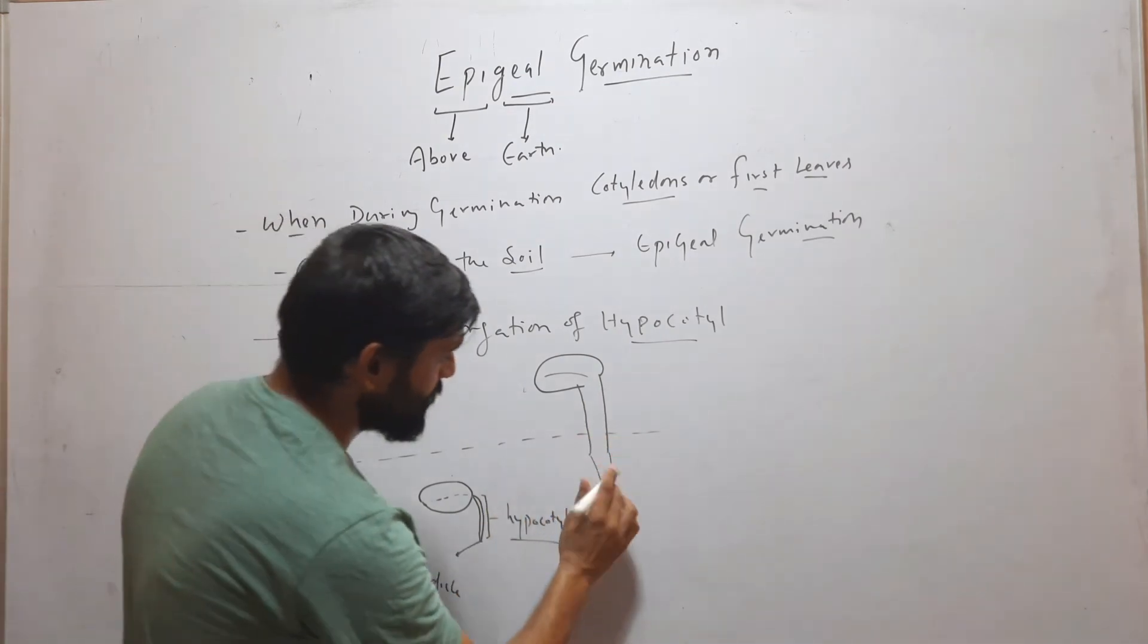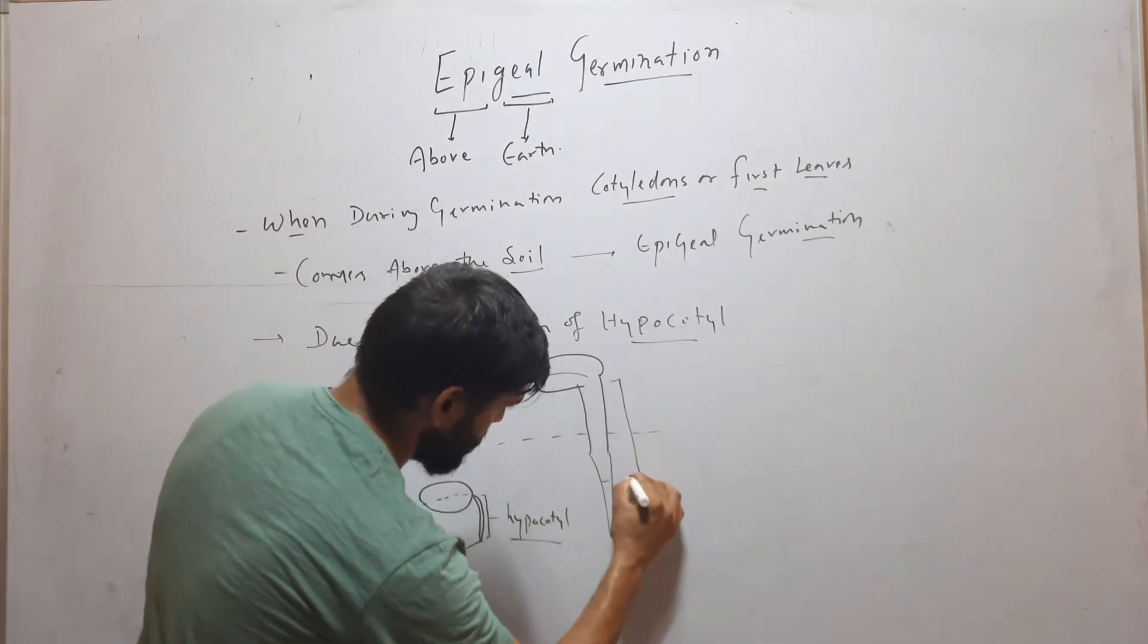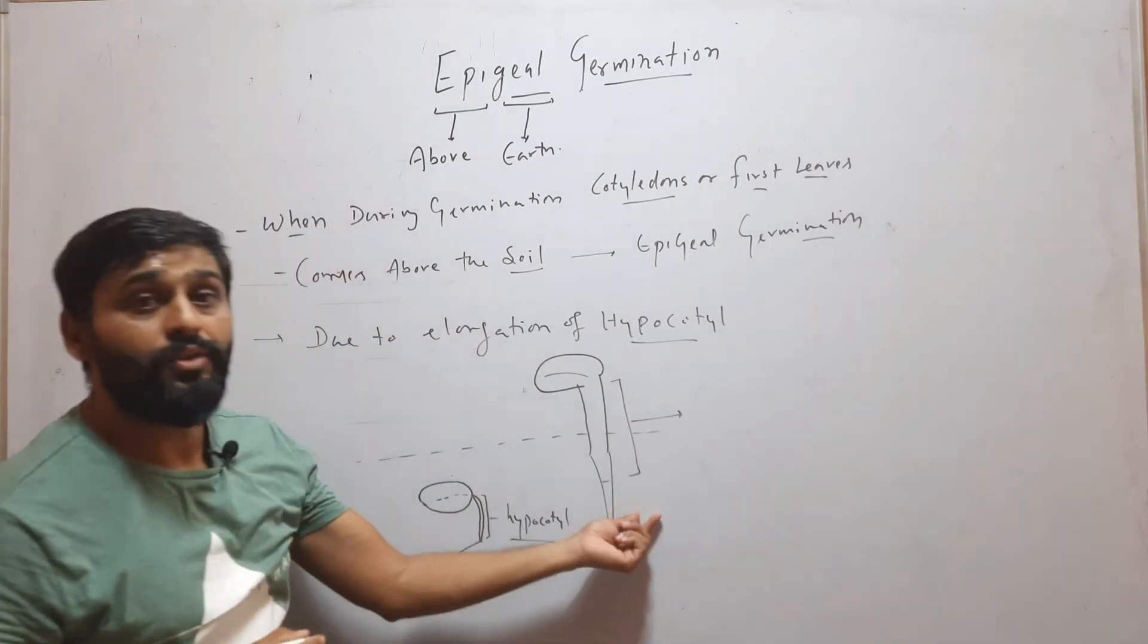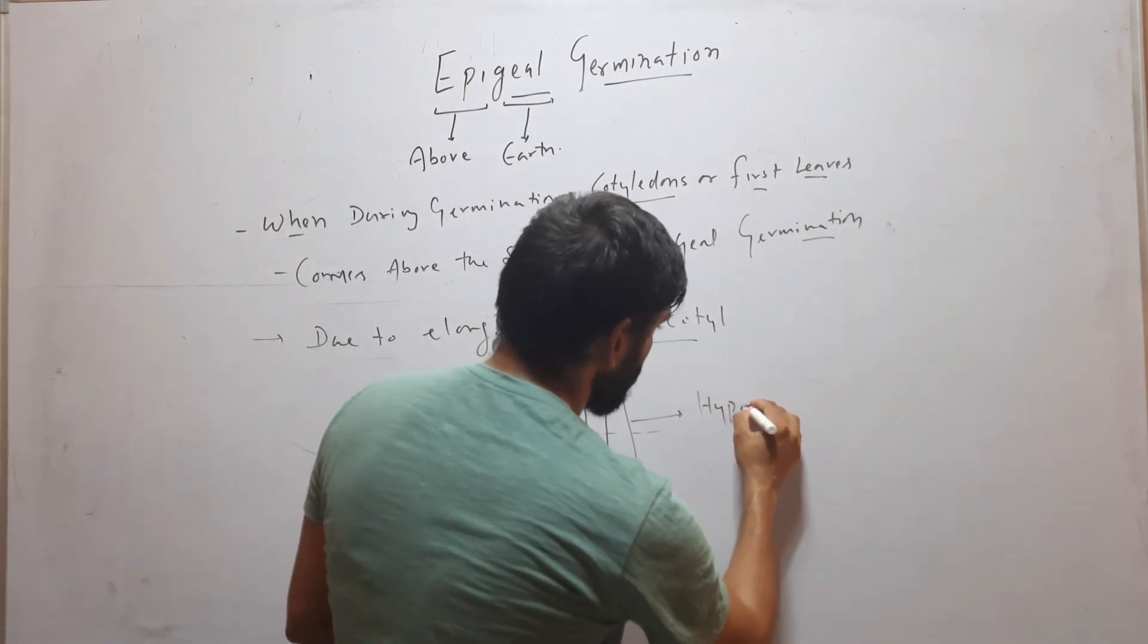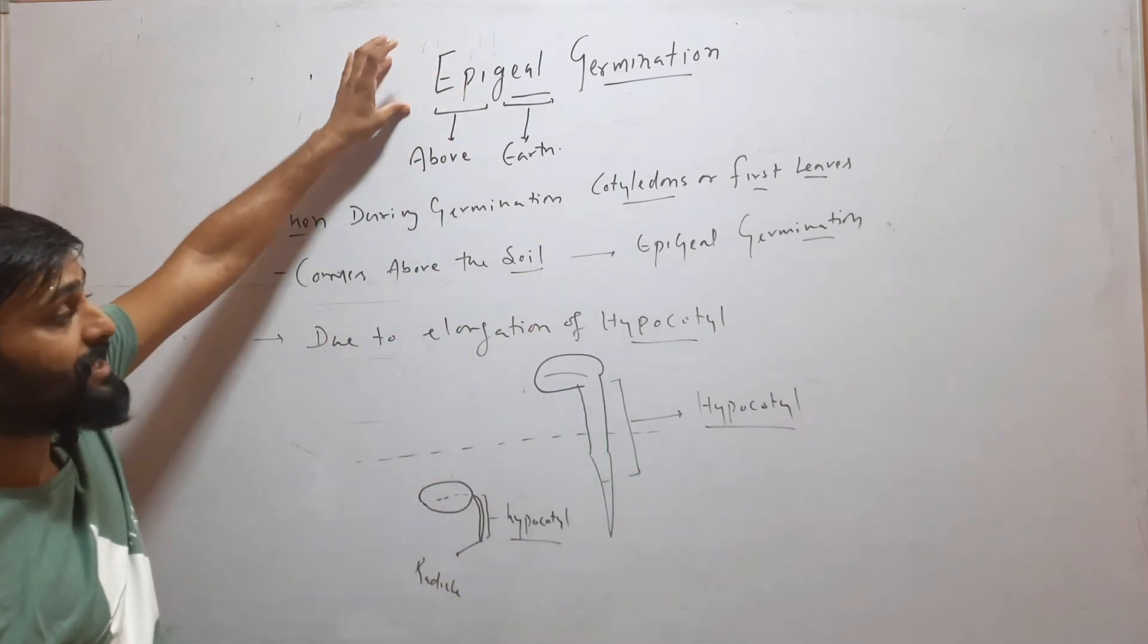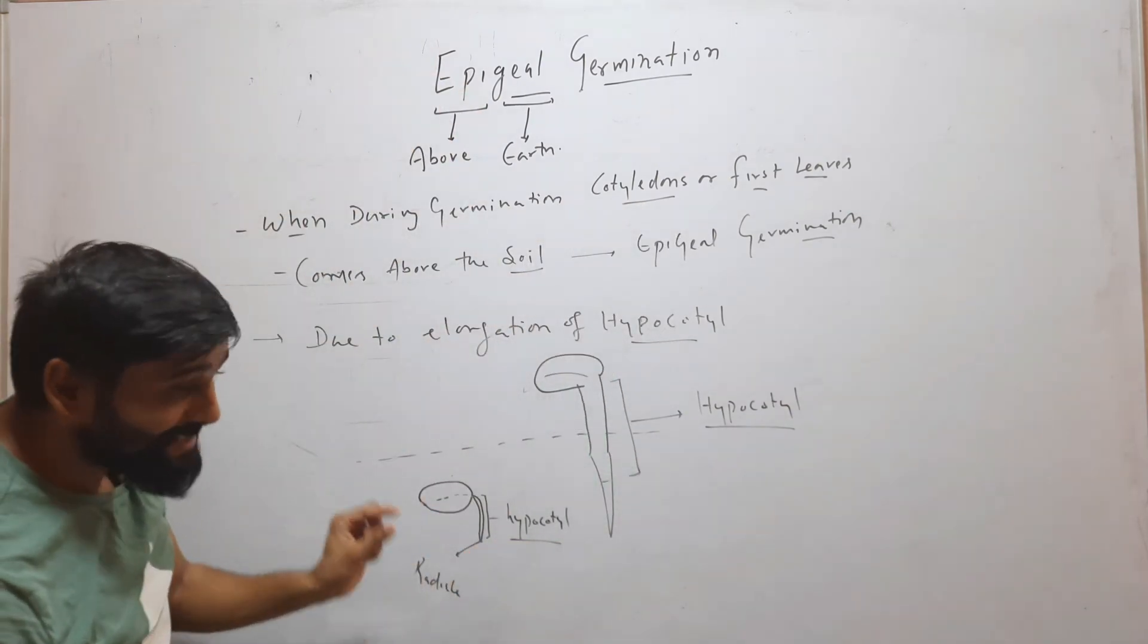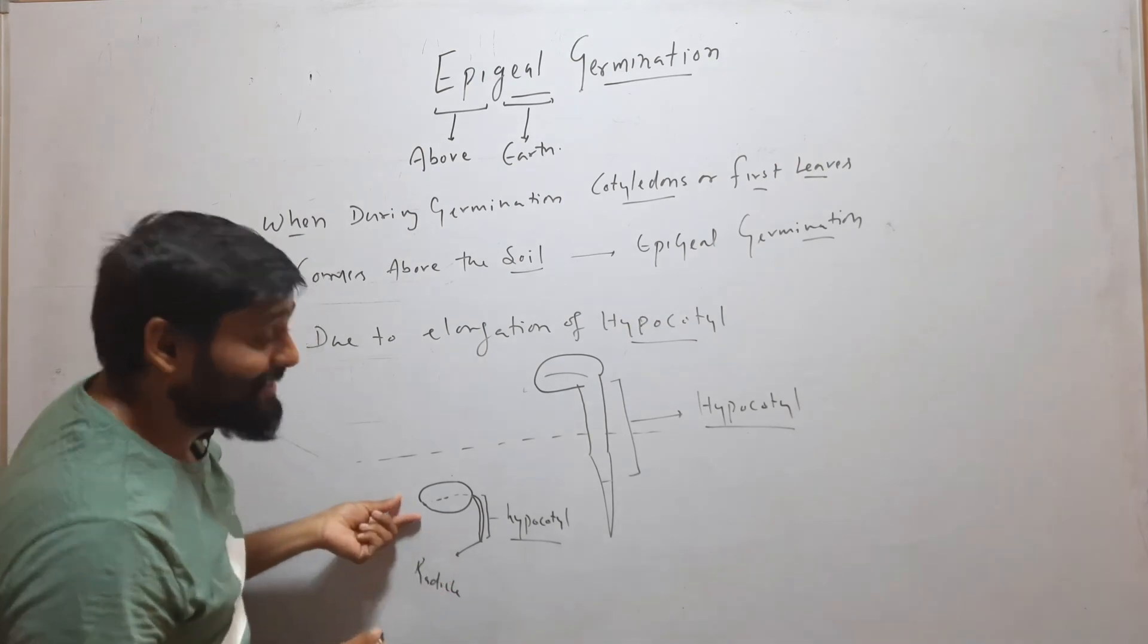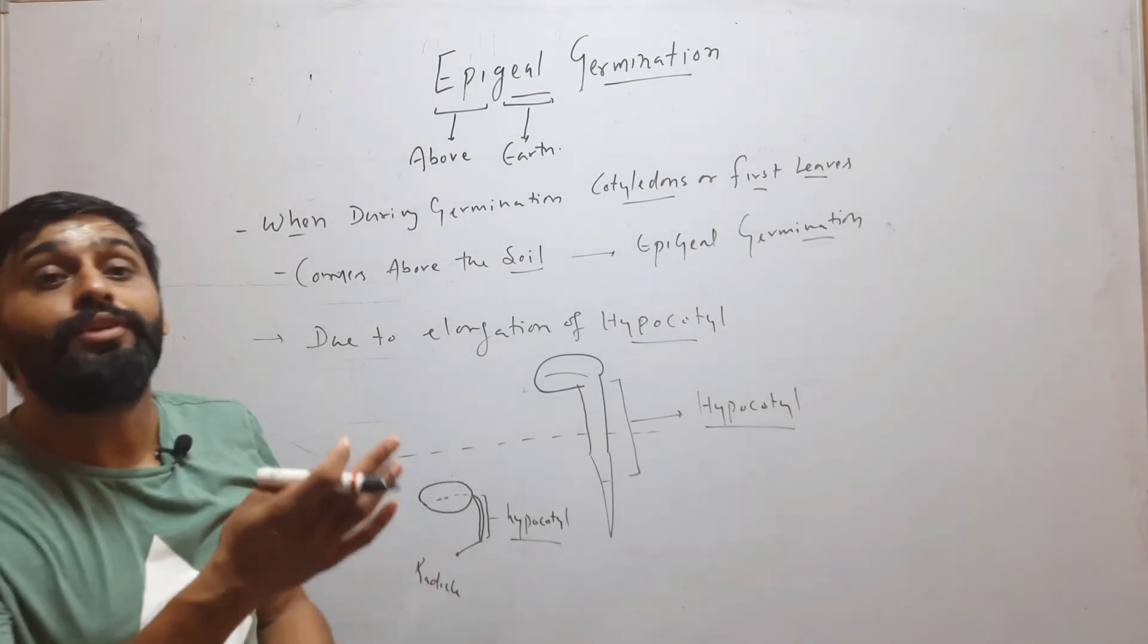This elongated portion is called hypocotyl. In case of epigeal germination, hypocotyl, the region present between cotyledon and radicle, will elongate.